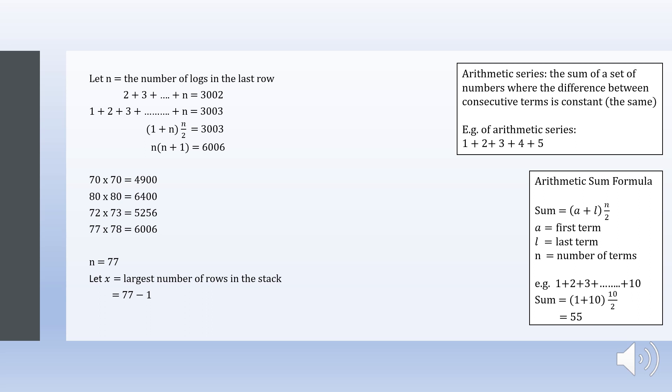So therefore, the largest number of rows possible in a stack with 3002 logs is 77 minus 1, which equals to 76 rows.